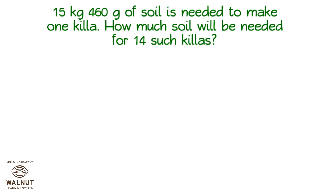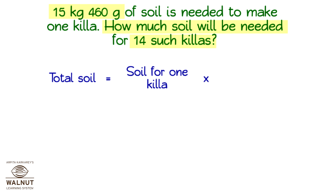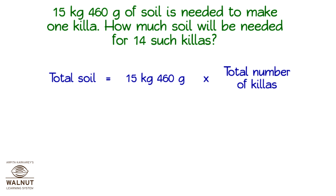15 kg 460 grams of soil is needed to make 1 khilla. How much soil will be needed for 14 such khillas? What do we have to find out? The total soil required. What do we know? The soil for 1 khilla and the number of khillas. We know the soil for 1 khilla and we have to find the soil for many khillas. This is obviously a multiplication problem. So, the total soil needed is the soil for 1 khilla multiplied by the number of khillas. The soil for 1 khilla is 15 kg 460 grams, and there are 14 khillas.